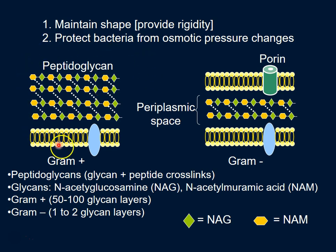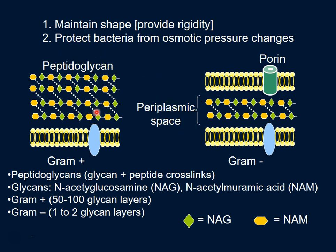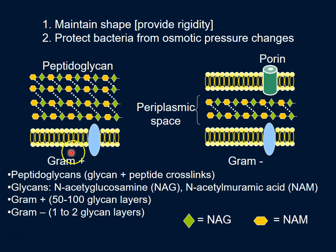Now we have gram-positive bacteria and gram-negative bacteria, and we've talked about this before. They both have the cell wall, but there are a few things that are different. The cell wall is made up of the same components — peptidoglycan — the difference being that in gram-positive, the cell wall is much thicker.